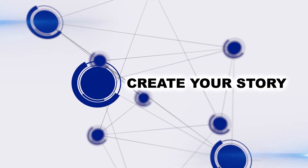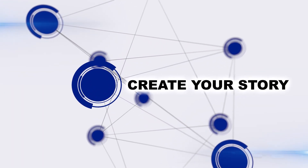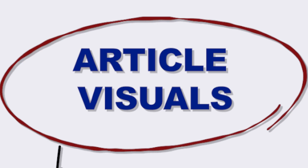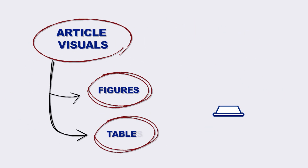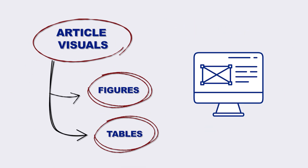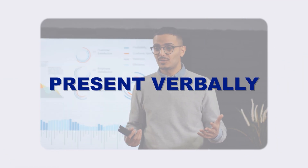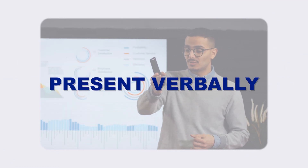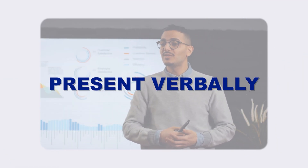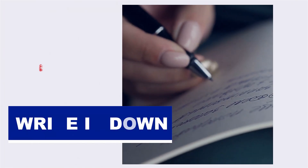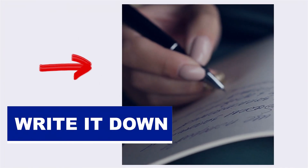To get started, first create your story. One of the ways I like to create my story is by creating the visuals that are going to be in my article — things like figures and tables. Once you have your visuals, you can present your story verbally. Then all you have to do is take that story you've already worked out and write it down, which makes the writing process a lot faster.